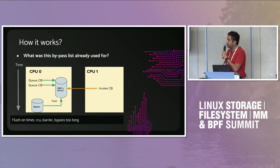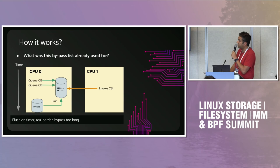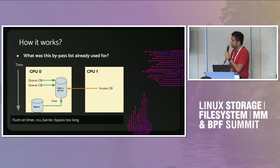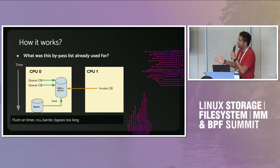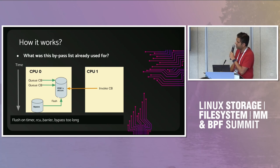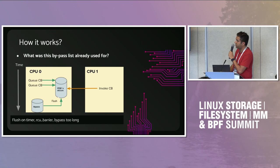Obviously we can't keep callbacks in the bypass list forever, so eventually they must be flushed back into the main callback list. There are different situations that trigger flushing: a timer that fires once enough time has passed; an RCU barrier that ensures all callbacks before it have executed; and a length check — if the bypass list gets too long, we flush it to avoid running out of memory.